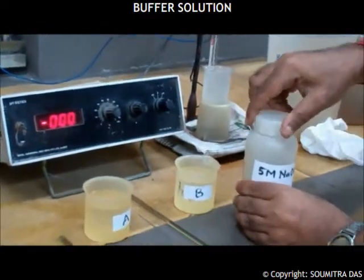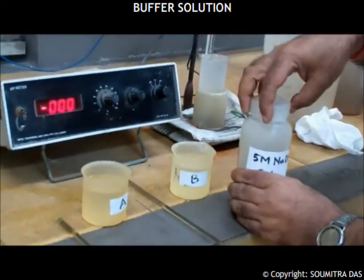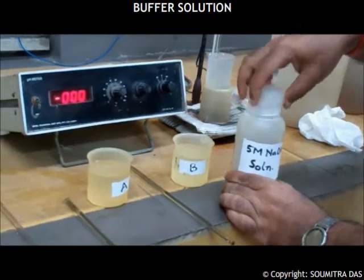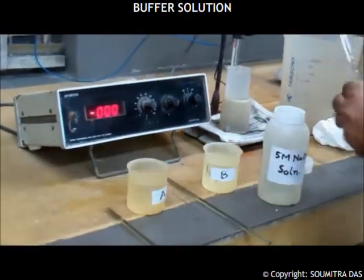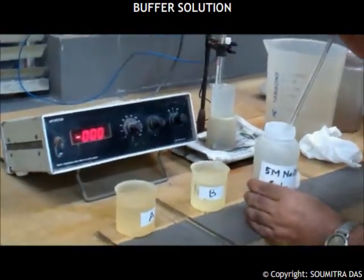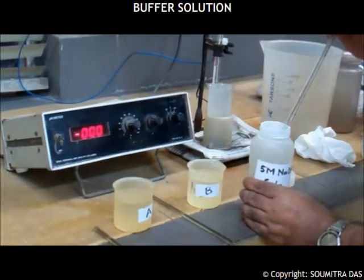Now I take the 5 molar NaOH solution and add 0.2 milliliter of this solution in each of the beakers tagged A and B by the help of a 1 milliliter graduated pipette.